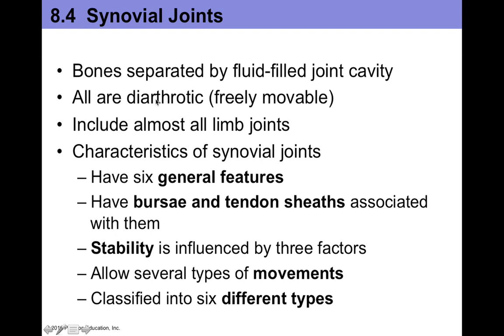When you think about the most movable joints of your body — like your shoulder, your hip, your knee, your elbow, your interphalangeal joints between your fingers — those are all synovial joints, which are considered diarthroses, or freely movable.